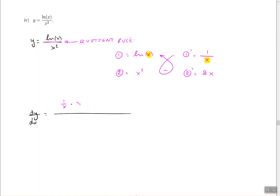So one prime is one over x times two, which is x squared. Then minus—that's the same minus that was in the middle—and then the two prime times one, so that's 2x times the ln of x.